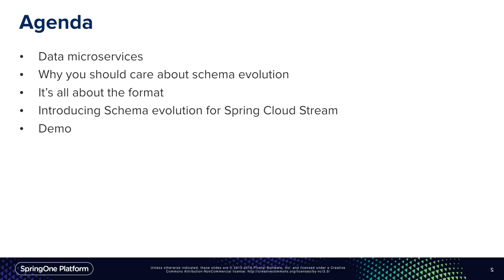So the agenda: I'm going to talk very briefly about what data microservices are, but I'm not going to dive too much into that — there are better sessions and better presenters. I'm going to point you in the right direction. Then I'll try to convince you why schema evolution is important for building resilient and evolutionary data microservices. Hopefully we'll converge on the idea that it's actually all about the format. Then we'll introduce the evolution support in Spring Cloud Stream 1.1 and a demo — all in under 28 minutes.